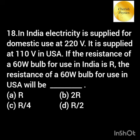Electricity supplied for domestic use in India is 220 volt and in USA is 110 volt. If the resistance of a 60-watt bulb for use in India is R, then for the same bulb the resistance in USA will be?